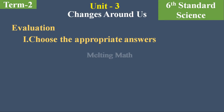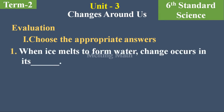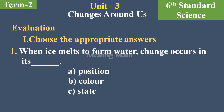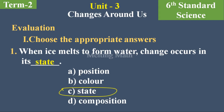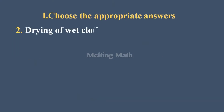First section: Choose the appropriate answers. Question one — when ice melts to form water, a change occurs in its blank. Options are: a) position, b) color, c) state, d) composition. When ice changes to water, which type of change is that? Definitely state — option C is the correct answer, because ice is in the solid state and water is in the liquid state, so it changes its state only.